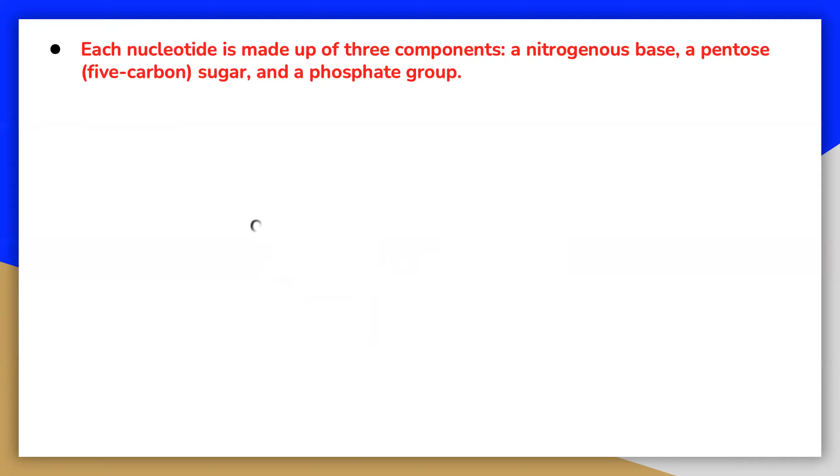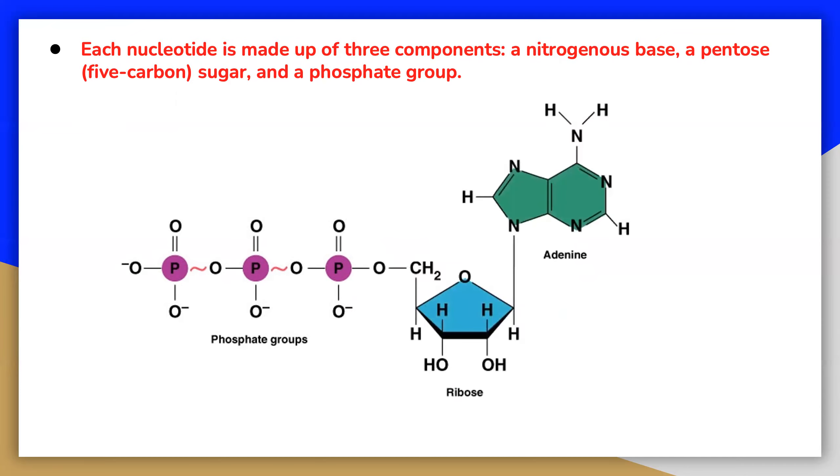A nucleotide is composed of three distinctive chemical subunits: a phosphate group, a pentose five-carbon sugar, and a nitrogenous or nitrogen-including base. Each nitrogenous base in a nucleotide is attached to a sugar molecule, which is attached to one or more phosphate groups.